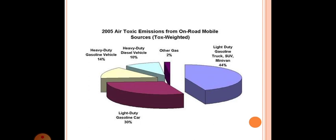2005 Air toxic emissions from on-road mobile sources. Heavy duty gasoline vehicle 14%, Heavy duty diesel vehicle 10%, Other gas 2%, Light duty gasoline truck SUV Minivan 44%, Light duty gasoline car 30%. As shown in this figure.